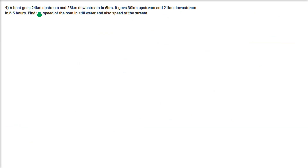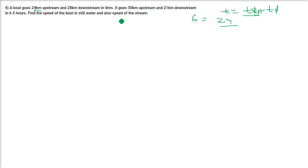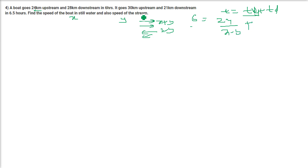A boat goes 24 km upstream and 28 km downstream in 6 hours. Total time equals time upstream plus time downstream equals 6. Taking X as the speed of the boat in still water and Y as the speed of the stream: upstream speed is X minus Y, downstream speed is X plus Y. So 6 equals 24 by (X minus Y) plus 28 by (X plus Y). This is our first condition.